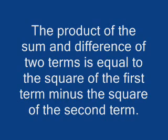The product of the sum and difference of two terms is equal to the square of the first term minus the square of the second term.